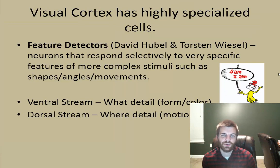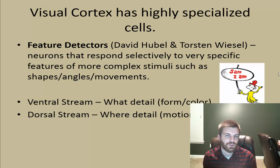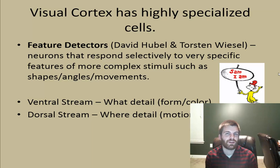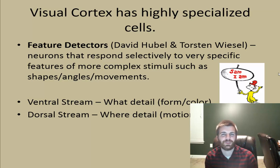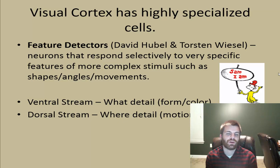Nobel Prize winners David Hubel and Torsten Wiesel found that there are specific neurons that respond selectively to certain things. Remember this as SAM-I-AM: SAM stands for shapes, angles, and movements. In the visual cortex, our brain selectively responds to movement, angles, shapes, and a collection of other things — this discovery is called feature detectors. There are also two streams: the ventral stream, which processes 'what' type details such as forms and colors, and the dorsal stream, which processes 'where' details such as motion or depth.